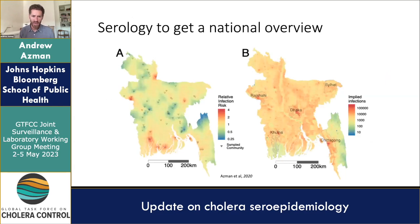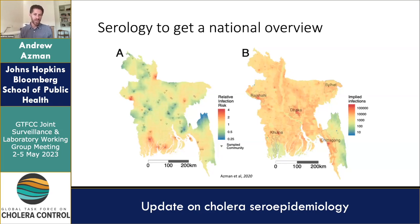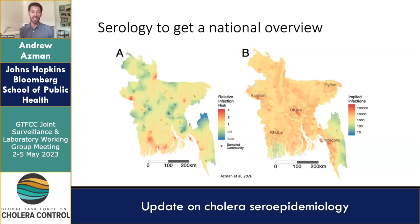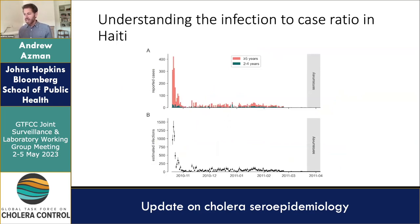A few examples of how these methods have been used: one of the first applications was taking data from a national sero-survey in Bangladesh to estimate sero-incidence of cholera across the country. We found that close to one in four to one in six people in the country are exposed or infected every year. Places like Dhaka, typically thought of as cholera hotspots, don't necessarily have higher relative infection risk than other areas — they just have higher absolute infections because of their large population.